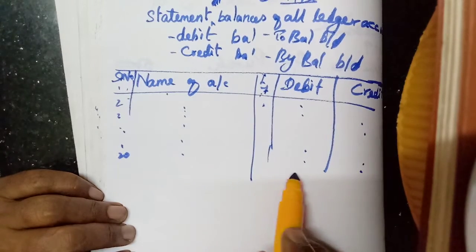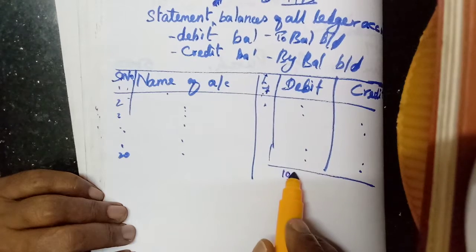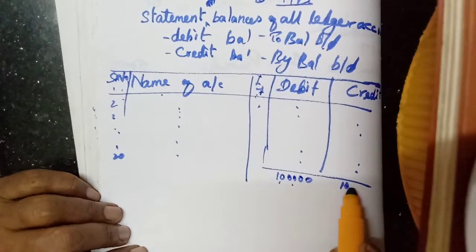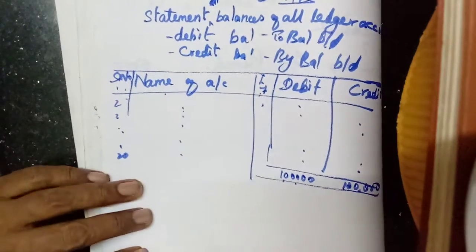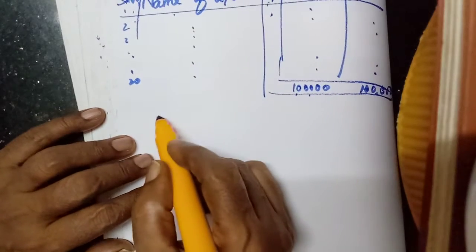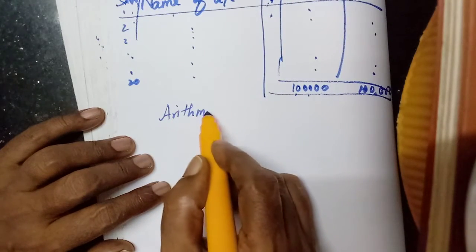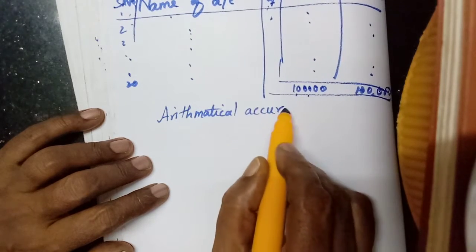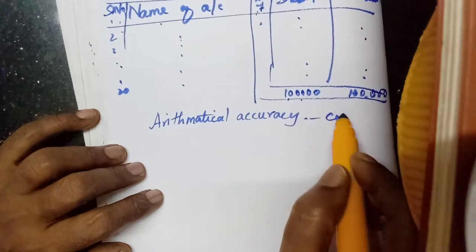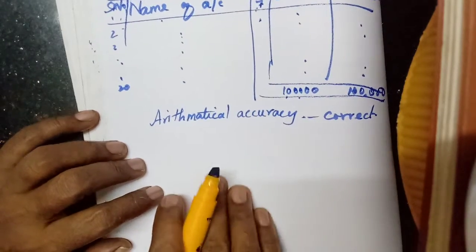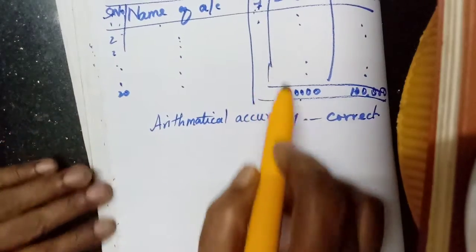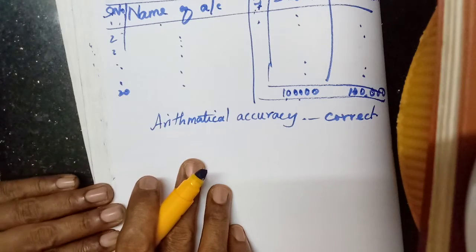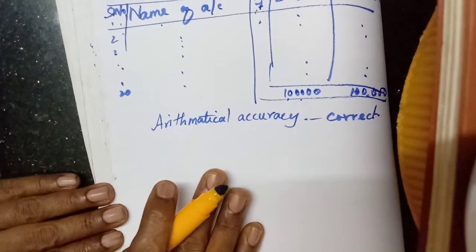Then we will add the two sides. For example, if we get one lakh on the debit side, the credit side should also get one lakh. Then we can conclude the arithmetical accuracy of the books of accounts is correct — that the total of the debit tallies with the total of the credit.